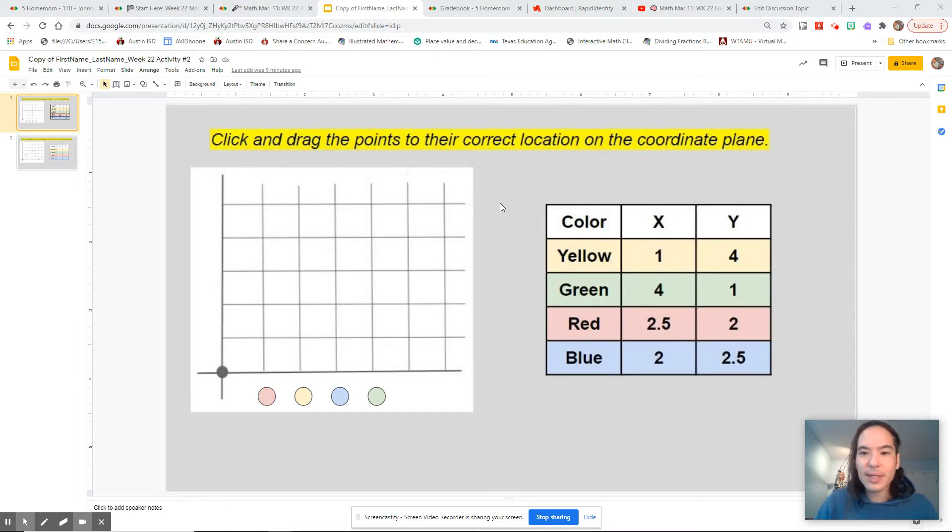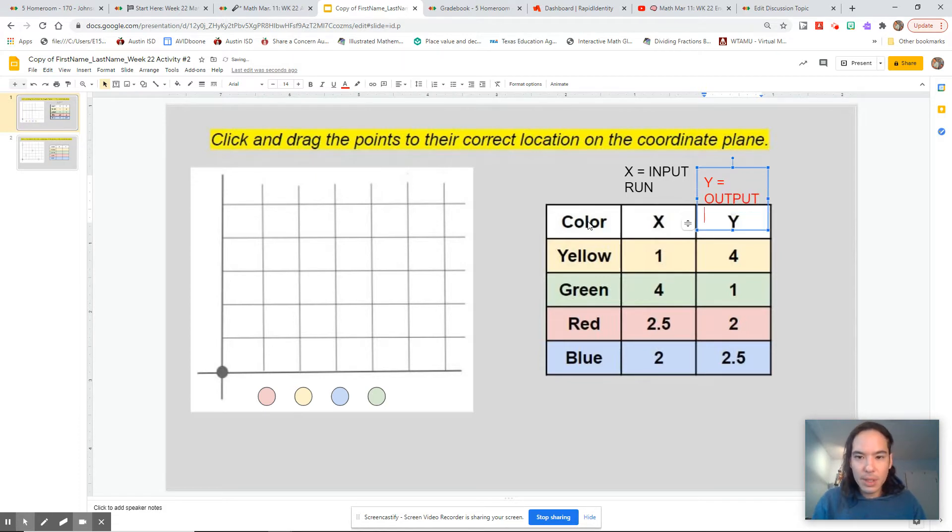Alright, so we're taking a look at a graph and we're taking a look at a table. This is a table. This is a graph. The graph looks like graph paper. A table looks like the tables you've been using for your whole school career.